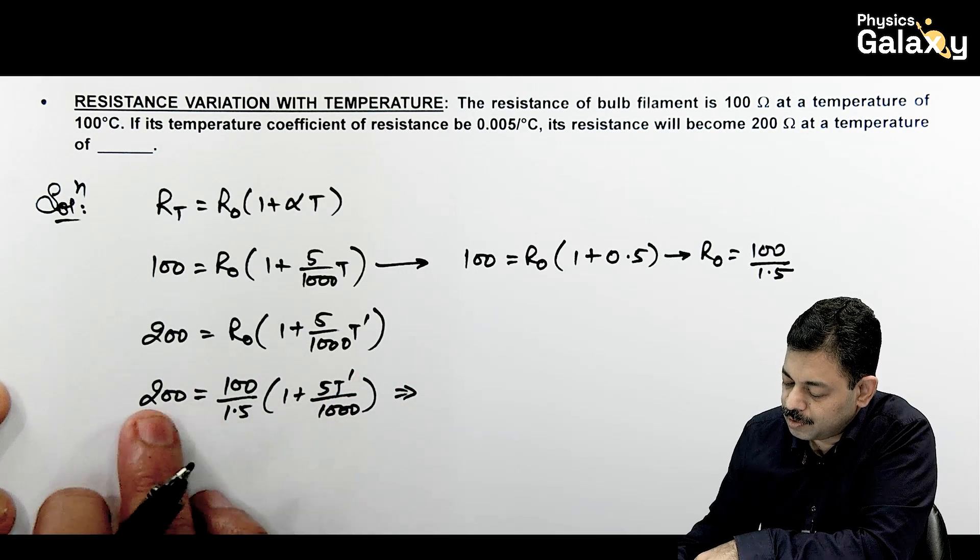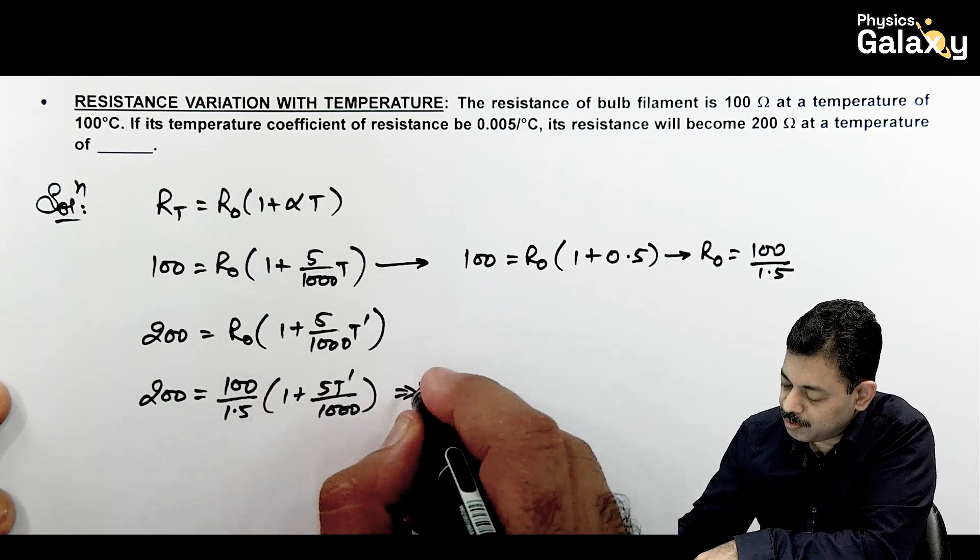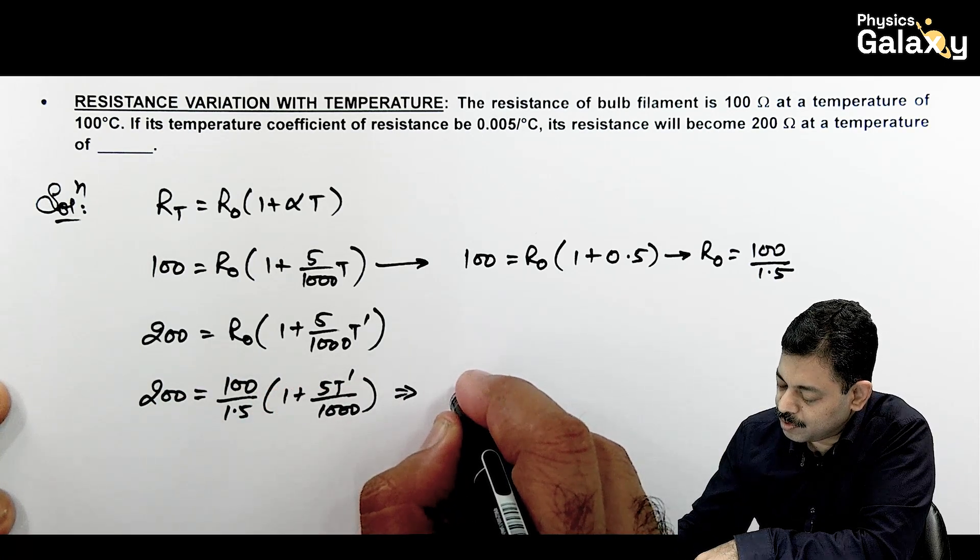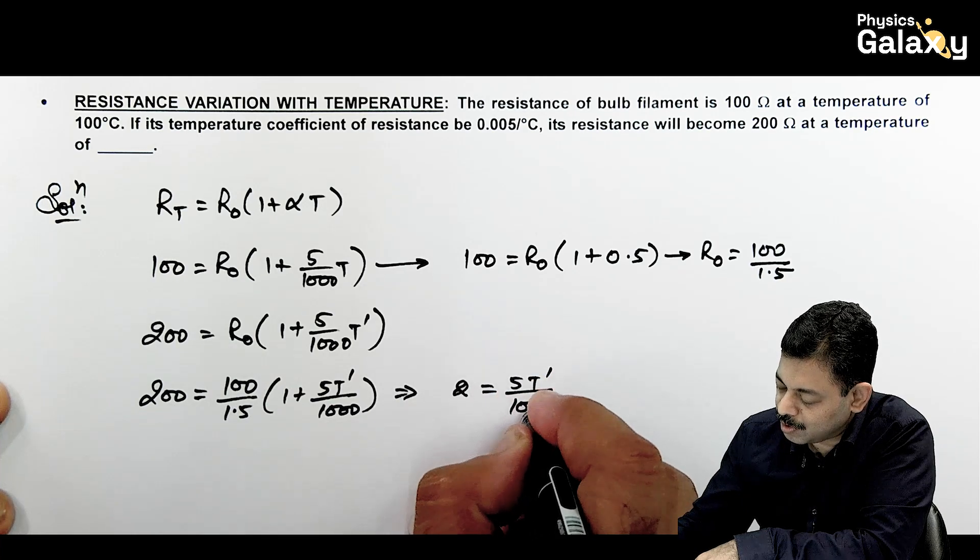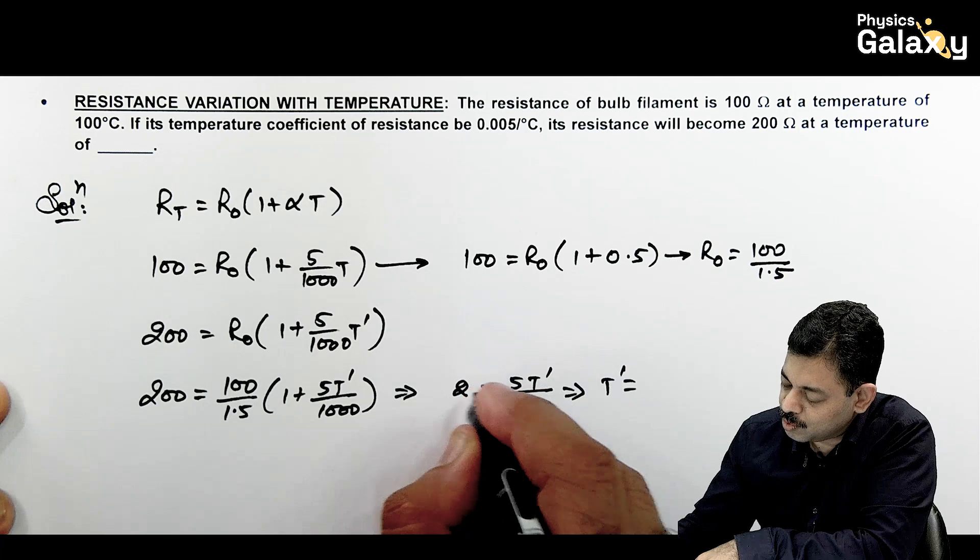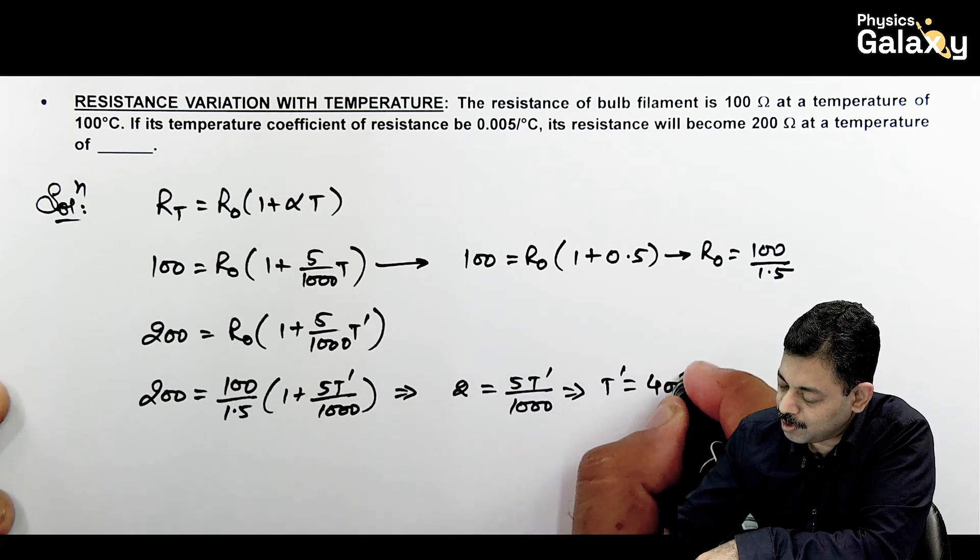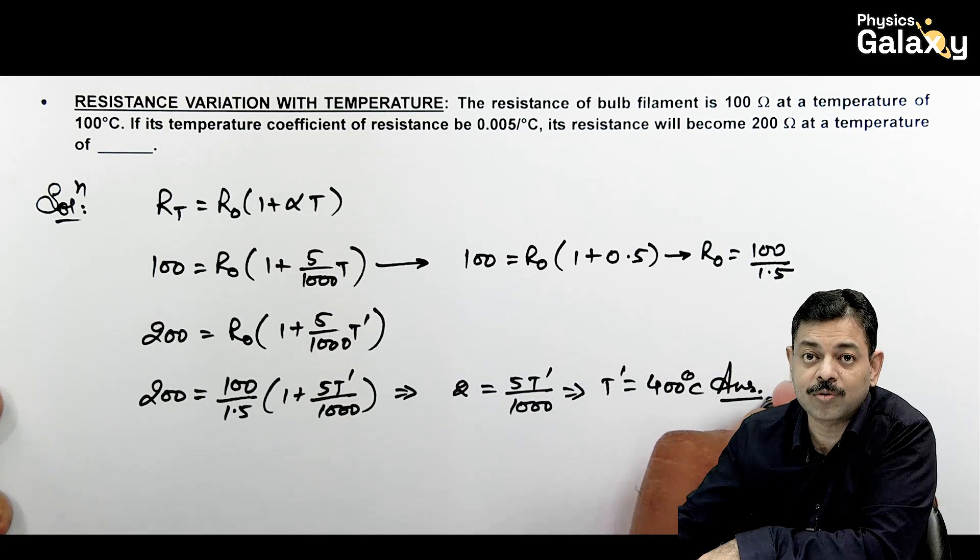If I simplify this, it gives us 300 by 100 is 3. So this is 3 minus 1, so this comes out to be 2 equals 5 T dash by 1000. That comes out to be T dash equals 2 multiplied by 200 is 400 degree centigrade. That is the answer to this question.